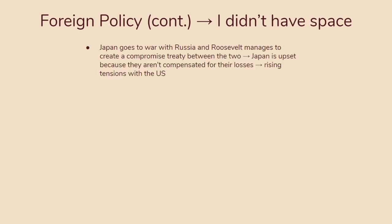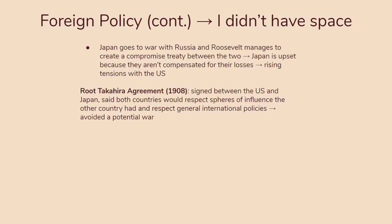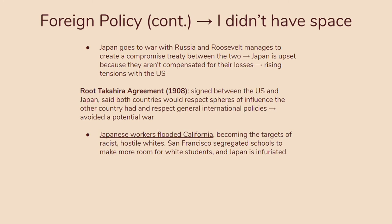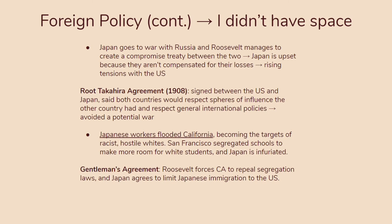Japan goes to war with Russia and Roosevelt manages to create a compromise treaty between the two, but Japan is upset because they aren't compensated for their losses, leading to rising tensions with the US. This is eventually resolved in the Root-Takahira Agreement of 1908, where both countries agreed to respect each other's spheres of influence and general international policies, avoiding another potential war. However, tensions remained because Japanese workers flooding into California were becoming targets of racist, hostile whites, and San Francisco had segregated schools. Through the Gentleman's Agreement, Roosevelt forced California to repeal the segregation laws and Japan agreed to limit Japanese immigration to the US.